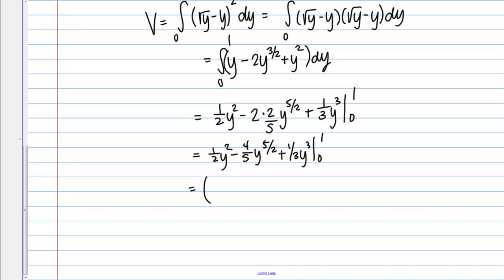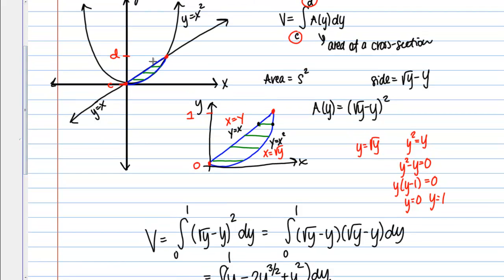So if I plug in 1, I'm going to get 1 half minus 4 fifths plus 1 third. And then minus 0. If I plug in 0, I just get 0. So I just have 1 half minus 4 fifths plus 1 third. And if you work that out, you should get the fraction 1 over 30. And that 1 over 30 is the volume of the solid that was described in the directions.